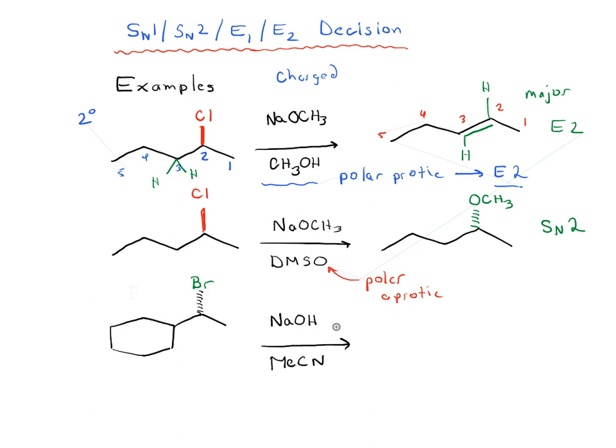And then maybe just one last example. Another situation where we're dealing with a secondary carbon. So we've already asked what type of substrate we're looking at. It's secondary. What type of nucleophile or base are we looking at? Well, it's charged, so it's strong for our purposes. Could be SN2, could be E2. Last question to ask, what type of solvent? And here it is polar aprotic. Polar aprotic, that means that really we're going to be looking at an SN2 reaction.